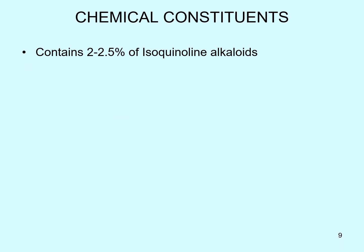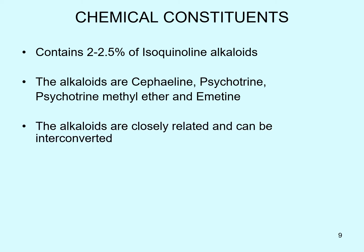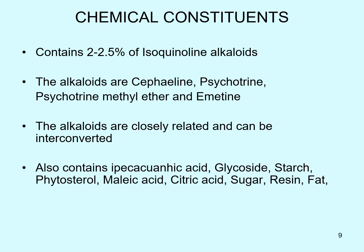Chemically, Ipecac contains 2 to 2.5% of isoquinoline-type alkaloids. The alkaloids are Cephaline, Psychotrine, Psychotrine methyl ether, and Emetine, which are closely related and can be interconverted. It also contains Ipecaconic acid, glycoside, starch, phytosterol, malic acid, citric acid, sugar, resin, fat, and calcium oxalate.